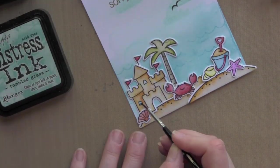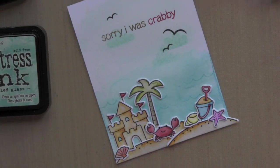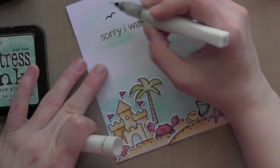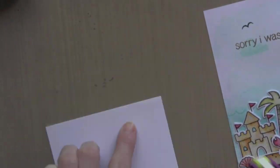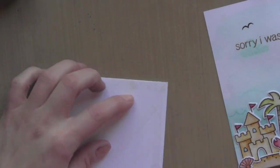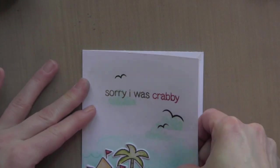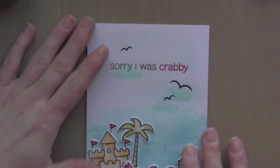I did go back in on my die cut and add a little additional blue because I realized the little cut outs on the sand castle were white and that kind of took away from the overall effect of the card. I will take that entire piece of watercolor paper now and just attach that to the front of a white card and my card is ready to be sent in the mail.